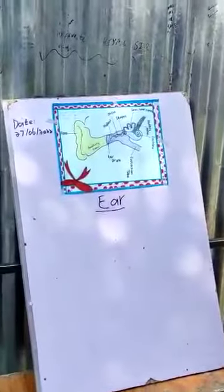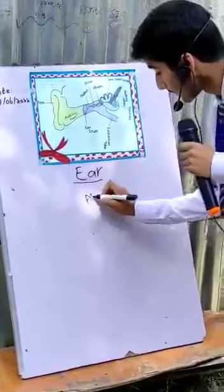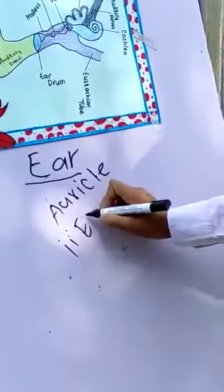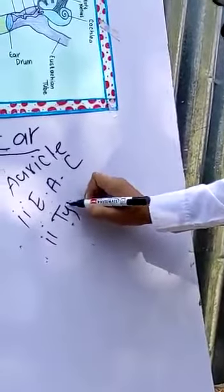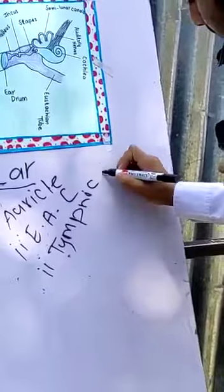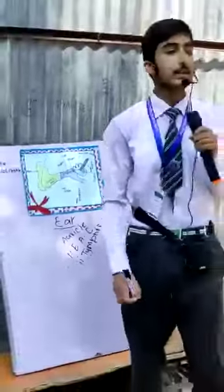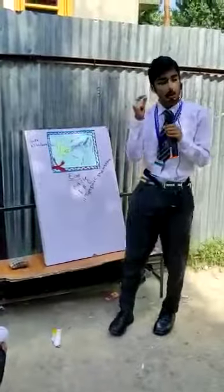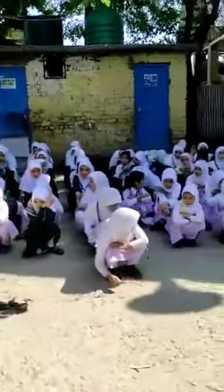The external ear is made up of cartilaginous bones and consists of three parts: the first is the auricle, the second part is the external auditory canal, and the third part is the tympanic membrane. First, we will see what is the auricle and what are the functions of the auricle. The auricle is also made up of cartilaginous bone, which is soft and makes an irregular shape.